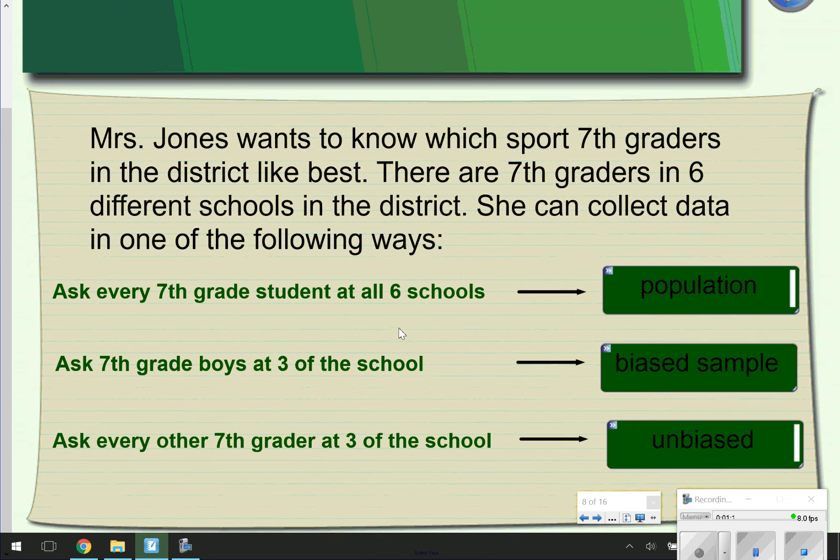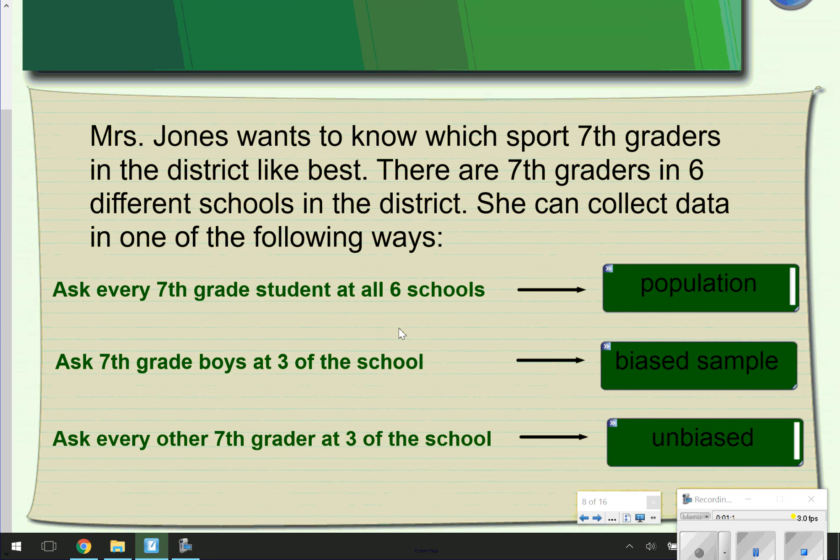Some more of these are just kind of considering what is happening. Ms. Jones wants to know which sports 7th graders in the district like best. There are 7th graders in 6 different schools in the district, and she can collect data in one of the following ways. If she asked every 7th grade student at all 6 schools, she'd be asking the population. That would be a great set of data, but it's also going to take her a really long time.